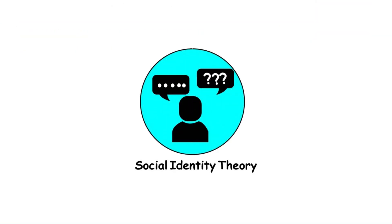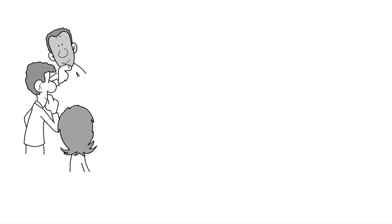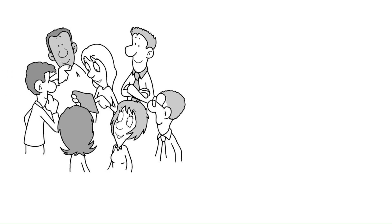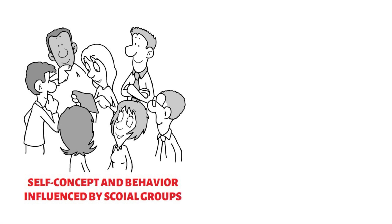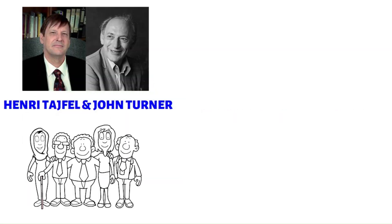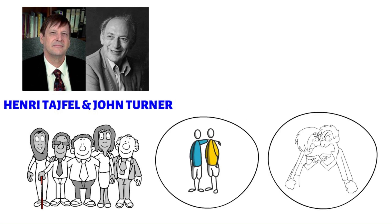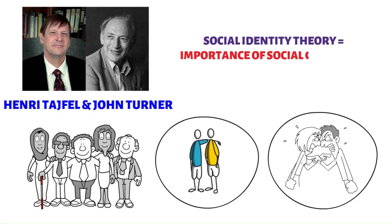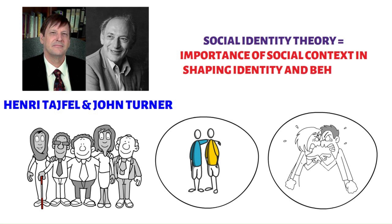Social Identity Theory explores how individuals' self-concept and behavior are influenced by their membership in social groups. Henri Tajfel and John Turner proposed that people categorize themselves and others into social groups, leading to in-group favoritism and out-group prejudice. Social Identity Theory emphasizes the importance of social context in shaping identity and behavior.